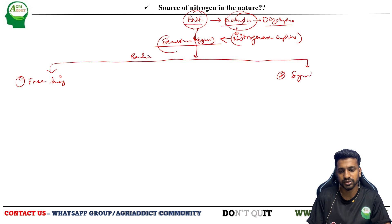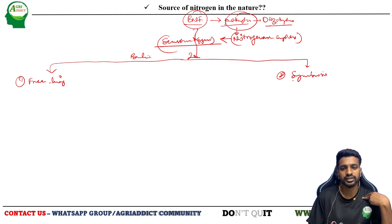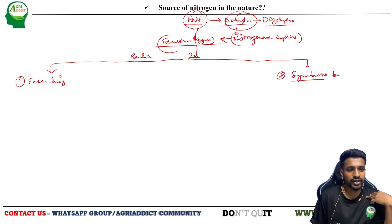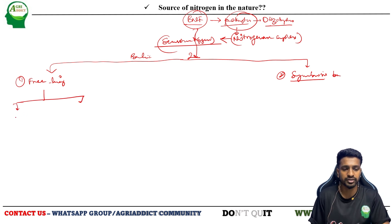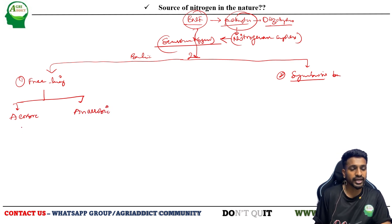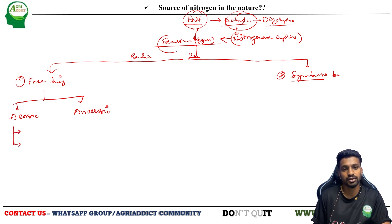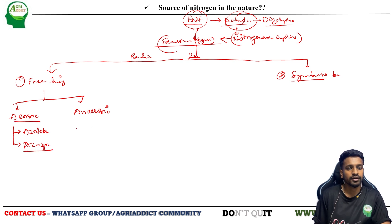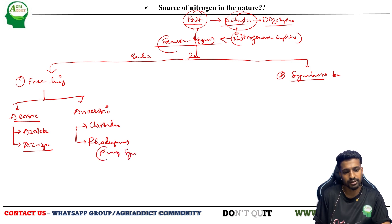There are several categories of bacteria which can fix atmospheric nitrogen. Based on their living nature — whether free-living or forming symbiosis with a host — they are classified into two broad classes: free-living bacteria and symbiotic bacteria. Within free-living bacteria, based on oxygen requirement they are aerobic or anaerobic. Important aerobic examples: Azotobacter and Azospirillum. Important anaerobic examples: Clostridium (non-photosynthetic) and Rhodospirillum (photosynthetic bacteria).